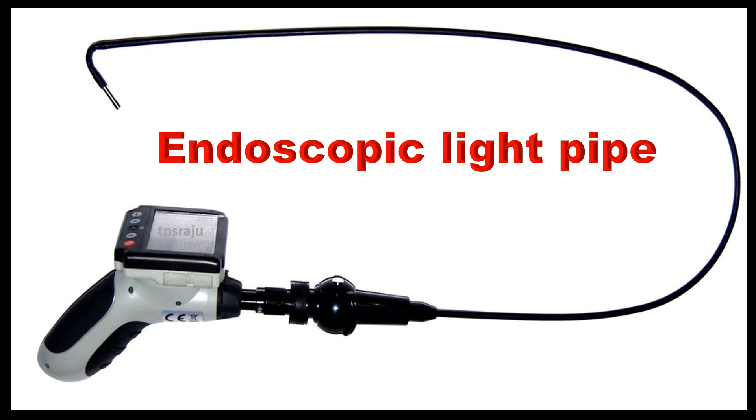By using optical fibers endoscopic light pipe is prepared. Doctor inserts the pipe into the stomach through the mouth. Light is sent through one set of fibers in the light pipe. This illuminates the inside of the stomach. The light from the inside travels back through another set of fibers in the pipe. Hence the image appears on the computer screen.